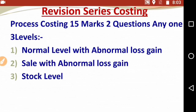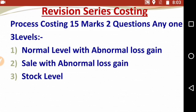Today I will tell you a method for solving process costing. When you solve it, you will know the first process gives abnormal loss, the next gives abnormal gain, and what transfers out of the first process — essentially the cost per unit. We will take about 5 minutes to make a working note, and in the working note we will find the answers for the whole process — abnormal loss or gain — so there is no need to redo calculations every time.